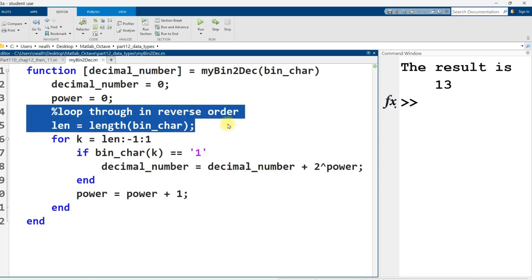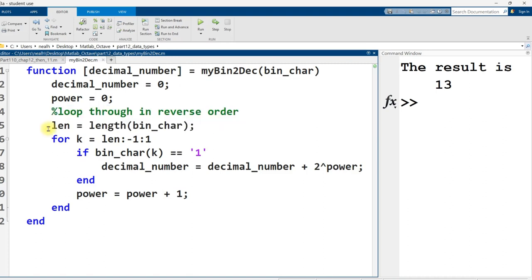Now I am going to loop through in reverse order, which is a little bit weird, but I need to do that because the small digits are on the right side and the large digits are on the left side. I just create a variable that's the length of my input. I loop in my for loop from the length, counting down by one, down to one.